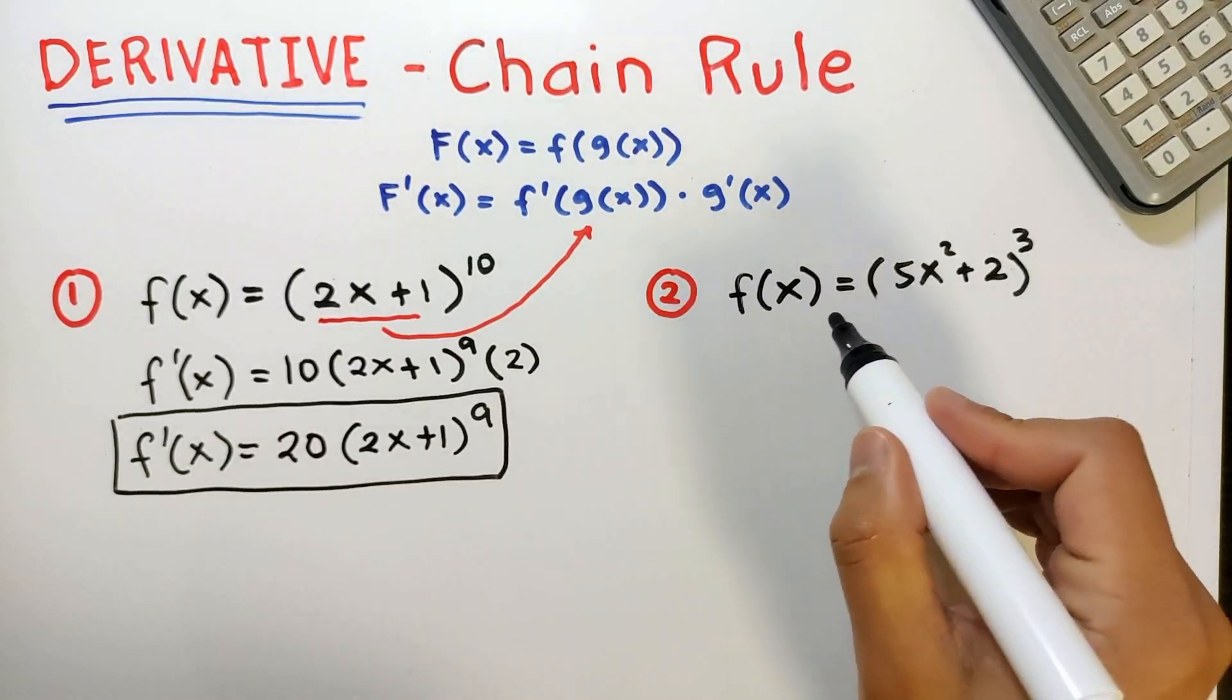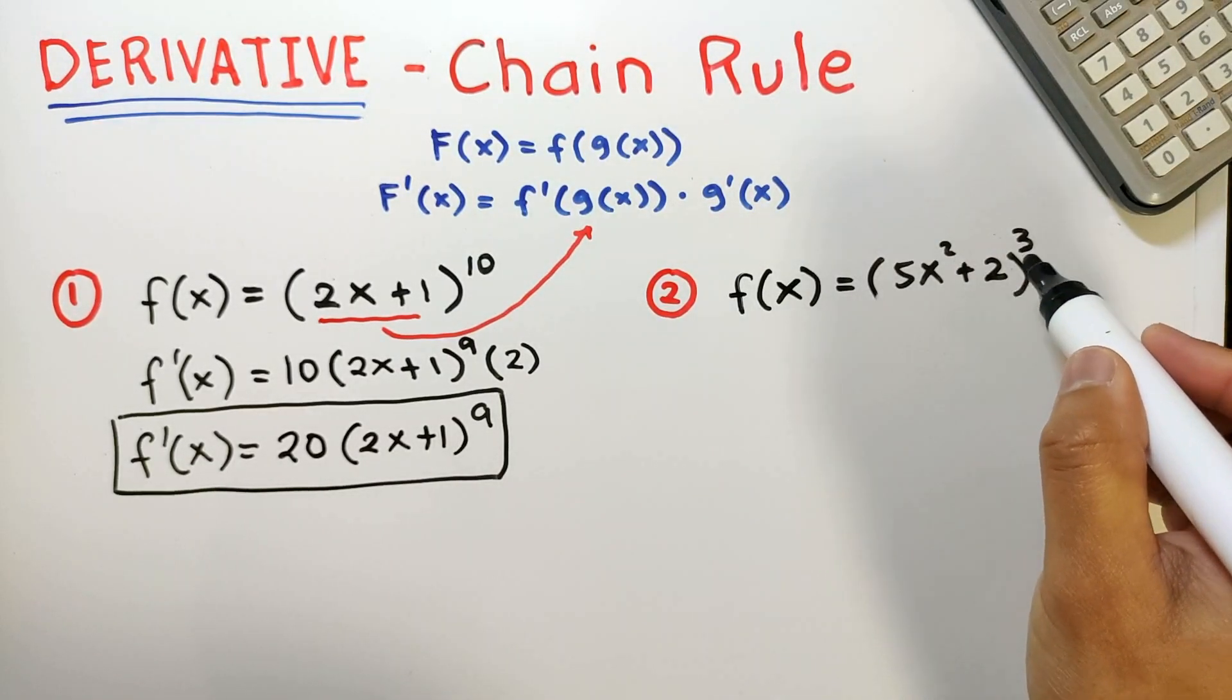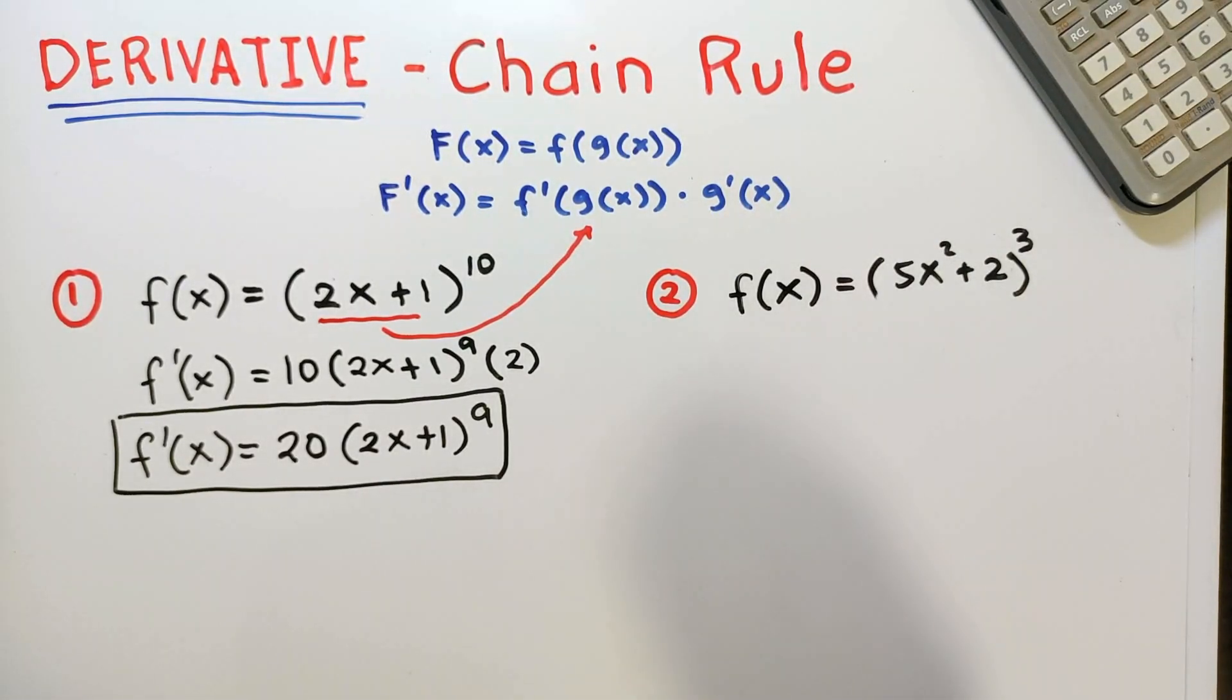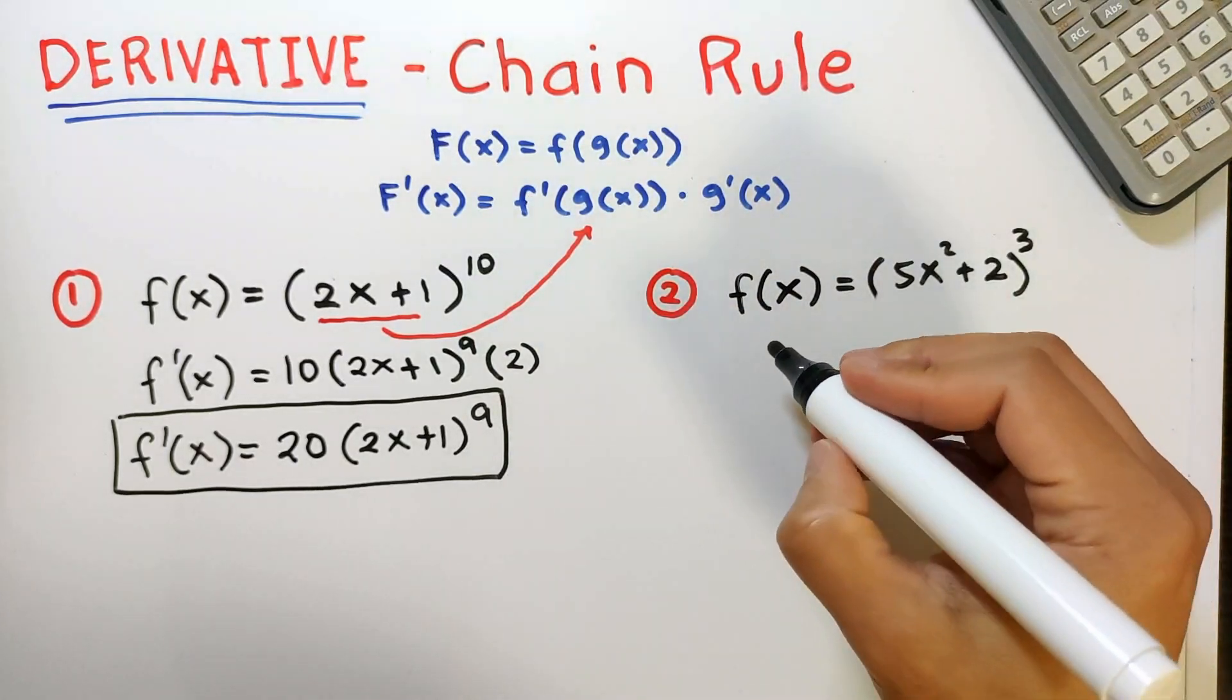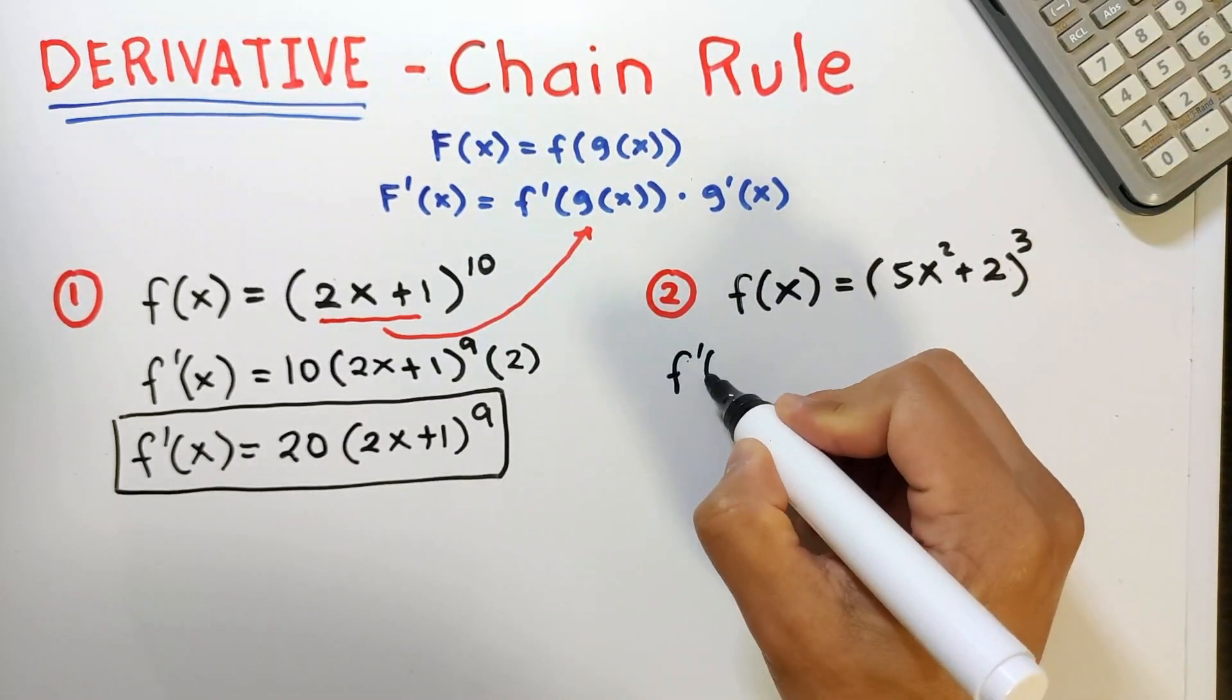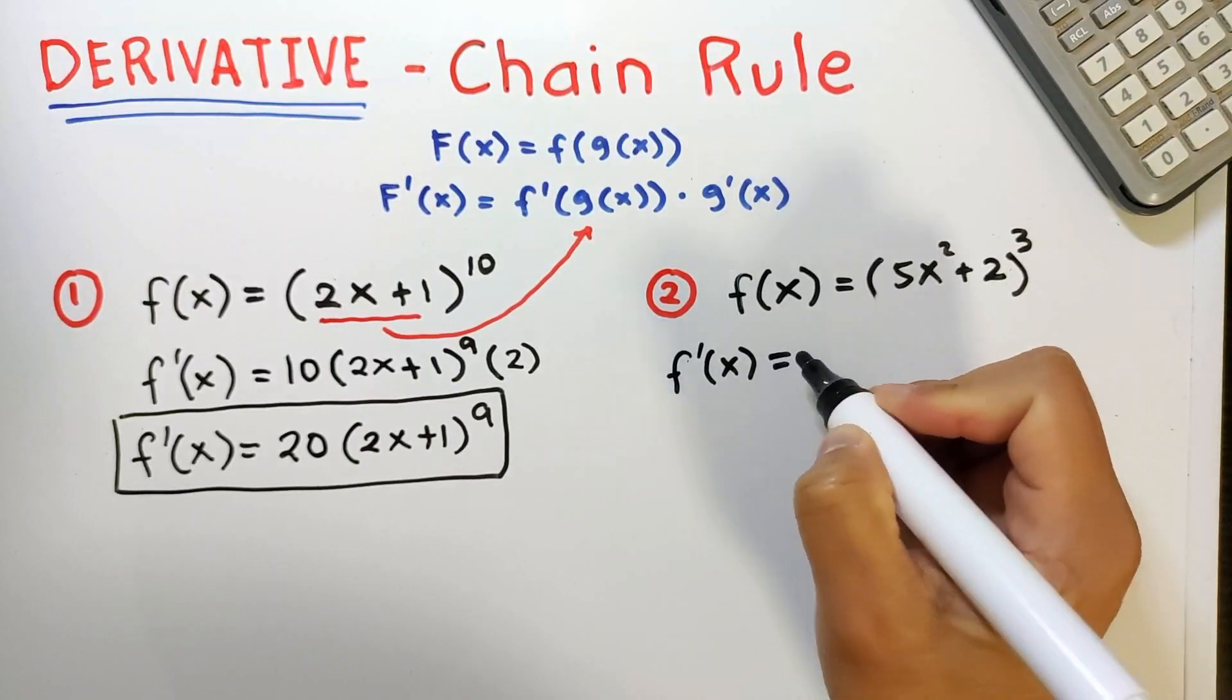Example number 2: we have f of x equals 5x squared plus 2 cubed. So now again, let's use this formula in finding the derivative of this function.